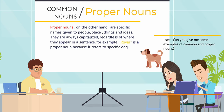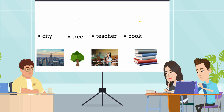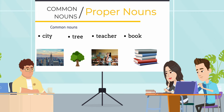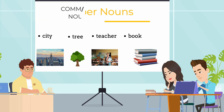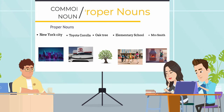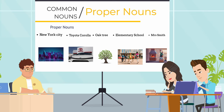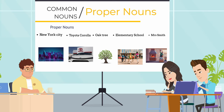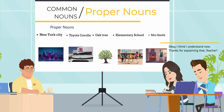I see. Can you give me some examples of common and proper nouns? Sure. Some examples of common nouns are city, car, tree, teacher, and book. Some examples of proper nouns are New York City, Toyota Corolla, Oak Tree Elementary School, and Mrs. Smith.